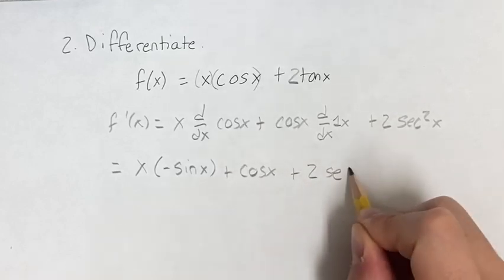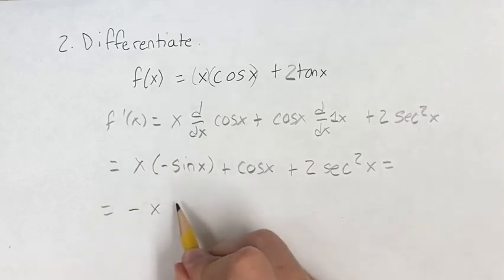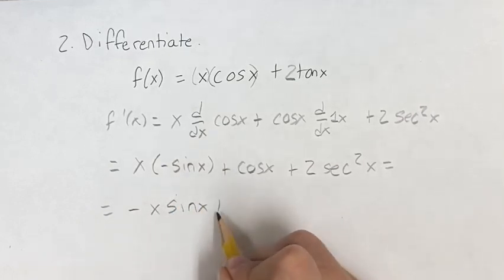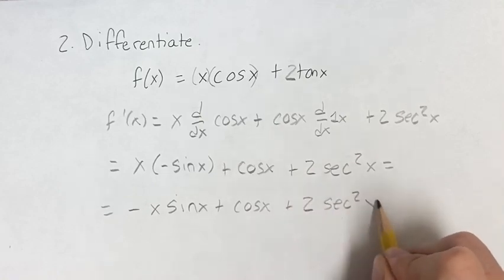And then plus 2 secant squared x. And then our last step is just to pull out this negative. So we're going to have negative x sine x plus cosine x plus 2 secant squared x.